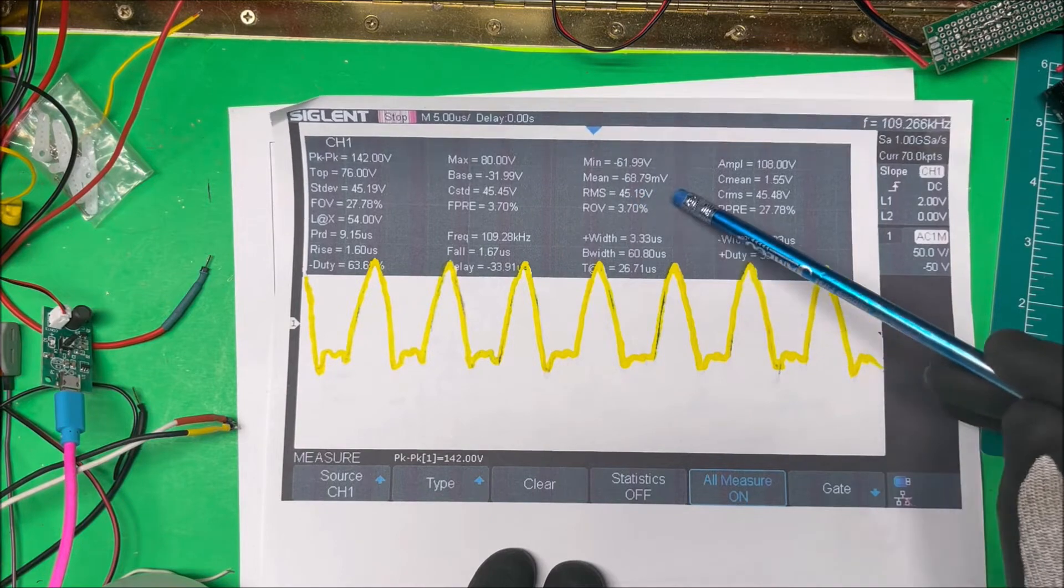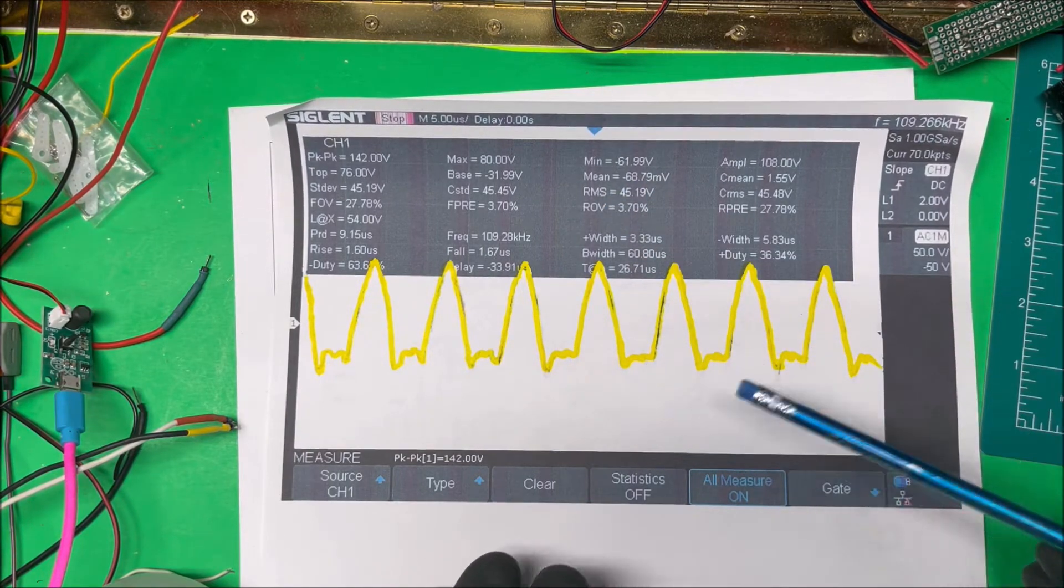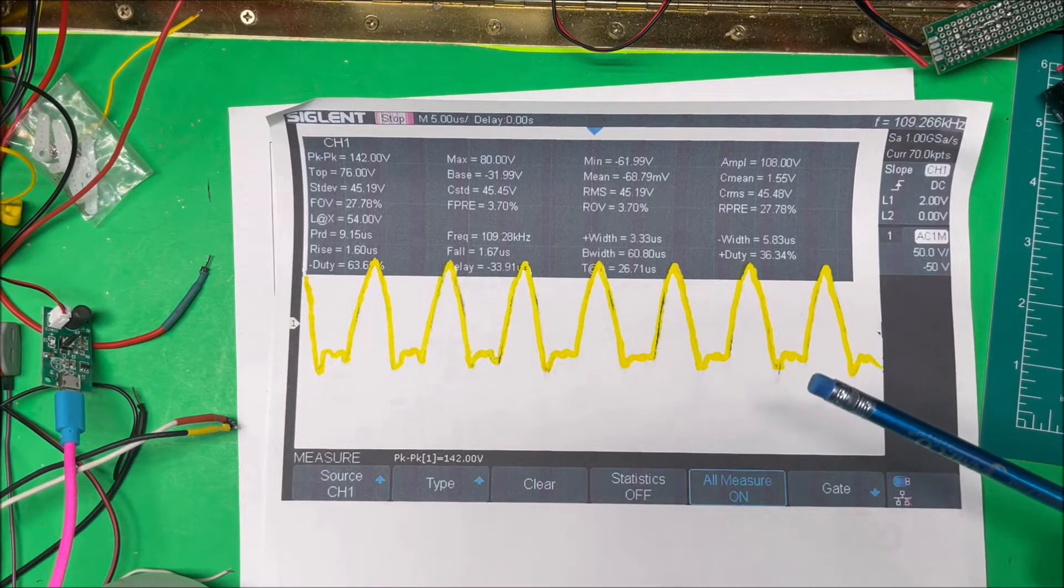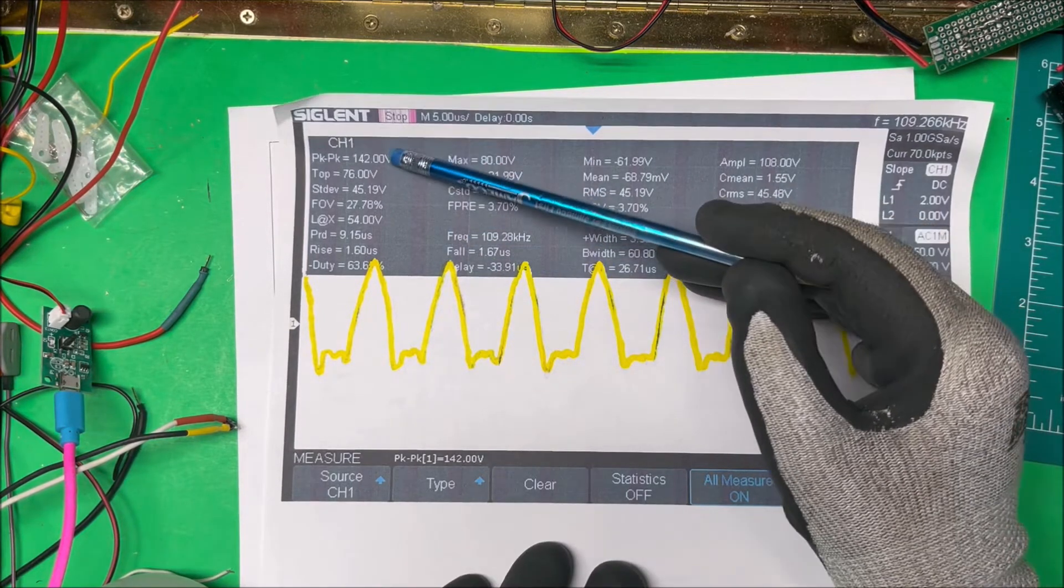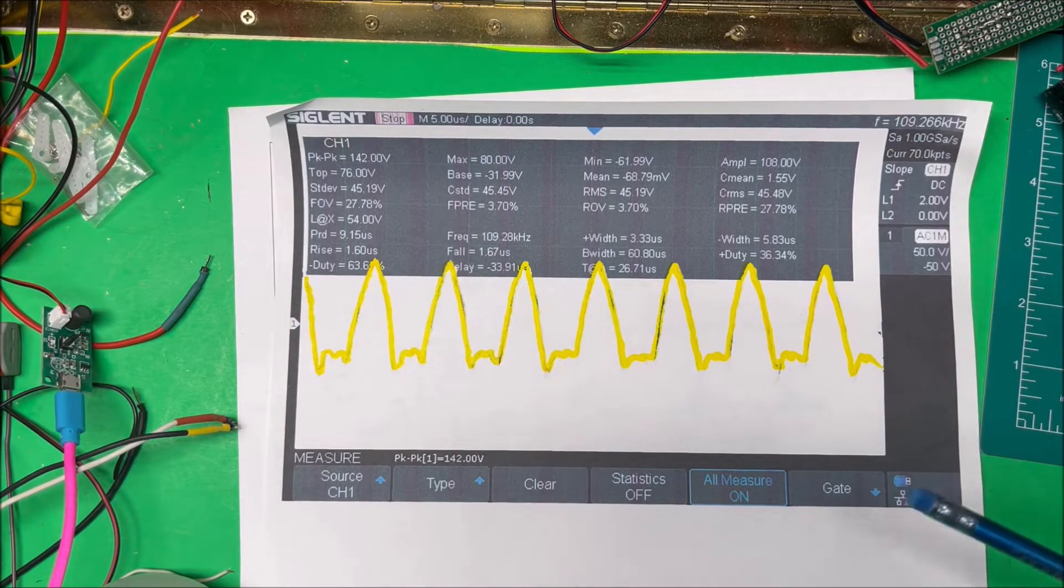The RMS is 45. It's kind of an odd sine wave here, so these numbers aren't quite right, but the peak value is 142, or peak to peak anyway. So 70 volts or so will run the thing.